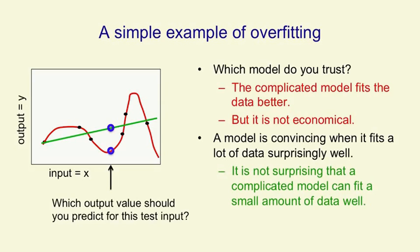So if you look at the arrow, which output value do you predict for this input value? You'd have to have a lot of faith in the polynomial model to predict a value that's outside the range of values in all of the training data you've seen so far. Almost everybody would prefer to predict the blue circle on the green line rather than the one on the red line. However, if we had ten times as much data, and all of these data points lay very close to the red line, then we would certainly prefer the red line.